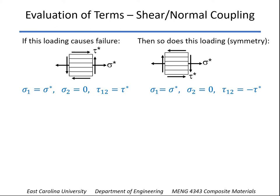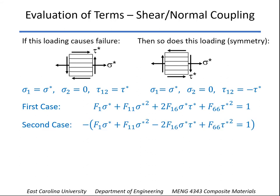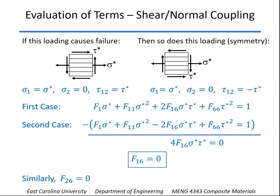And so at failure, on the left-hand side, sigma star and tau star are going to be the stresses at failure. And on the right side, sigma star and minus tau star will be the stresses that cause failure. So in the first case, we plug that into the Tsai-Wu criterion, and for the second case, we do the same thing. And now we'll subtract the second equation from the first. As we can see, certainly there is a non-zero combination of sigma and tau that will cause failure. So the only way this would be true is if F1-6 is equal to zero. And we can make a similar argument for F2-6. So at this point, we've defined all of the terms except for one.